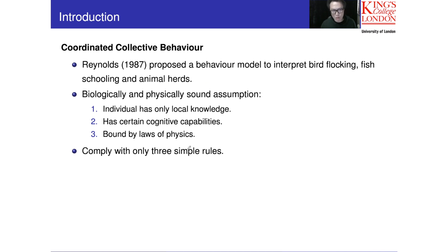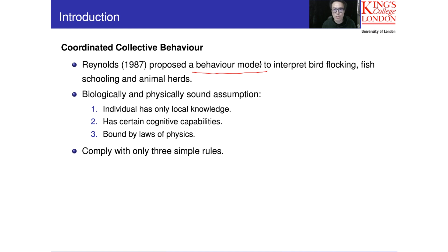The problem is: if we would like to develop an algorithm so that numerically we can use it to optimize a function, the first thing we need is a model. Once we have a model we know how to model the behavior of these agents so we can implement it numerically. This is very similar to the ant model. For particle swarm optimization, we are based on coordinated collective behavior proposed by Reynolds.